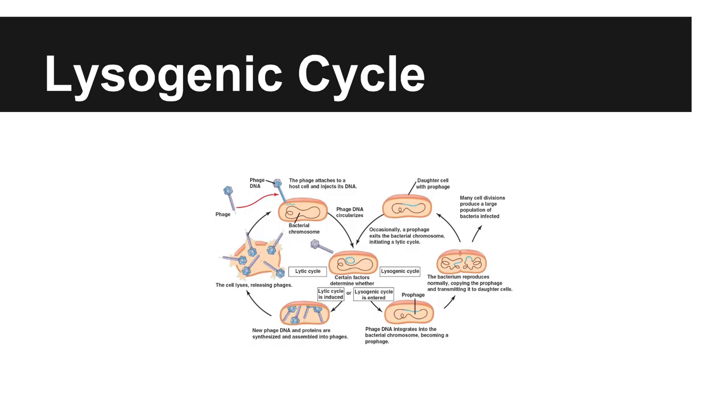Now moving on to the lysogenic cycle. The other cycle used for viral replication is this. The lysogenic cycle is when the viral DNA replicates without destroying the host cell. That is the key difference between these two processes. Viruses that go through the lysogenic cycle are known as temperate viruses.